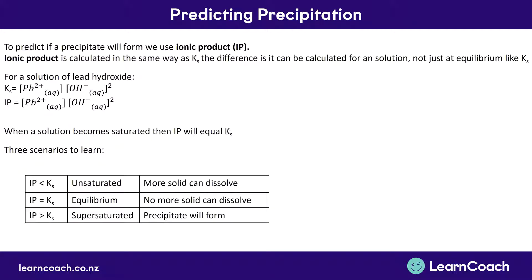The first thing we're going to be looking at in predicting precipitation is working out what equation we use to predict it. We use something called the ionic product, written as IP. The ionic product is calculated in the exact same way as Ks — products over reactants.